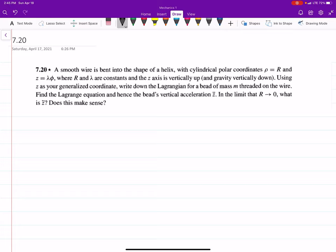Using z as your general coordinate, write down the Lagrangian for a bead of mass m threaded on the wire. Find the Lagrangian equation and hence the bead's vertical acceleration z double dot.